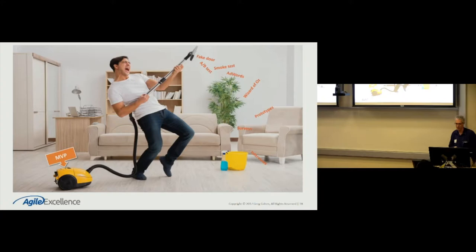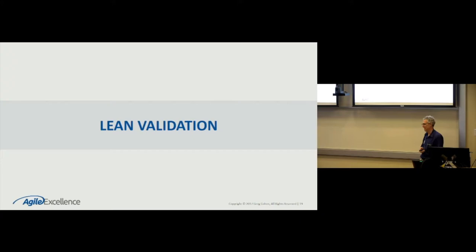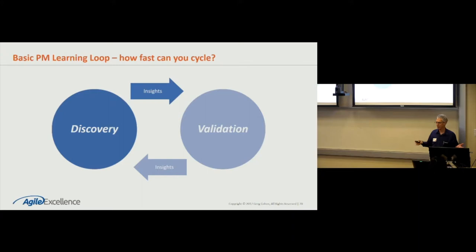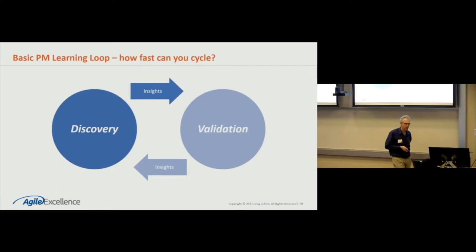That gets us to lean validation. At a minimum, this is what we should be looking for — very similar to build-measure-learn. But in product management we do discovery and we do validation. And like lean, the faster we can crank the learning loop, the faster we can get to product-market fit.